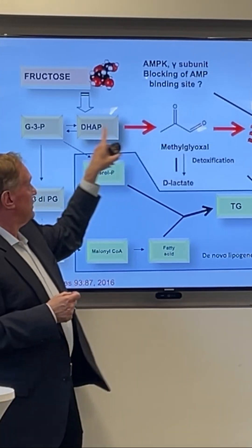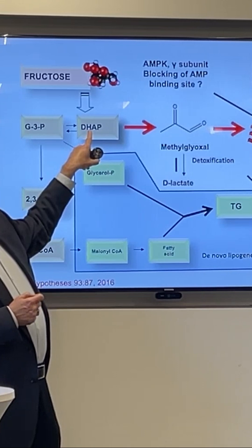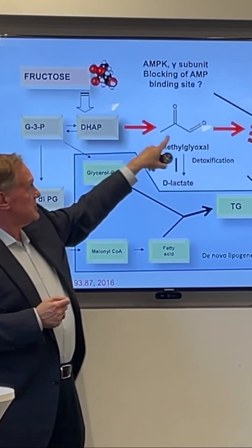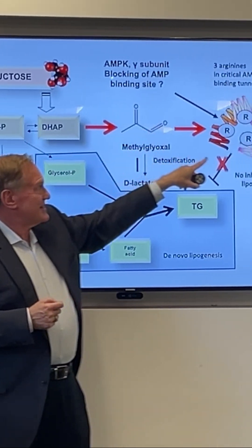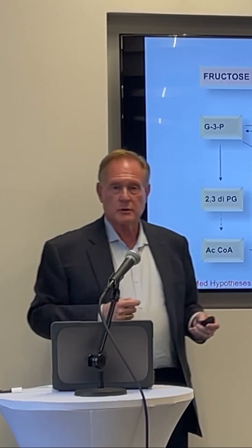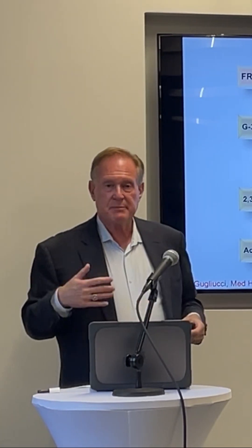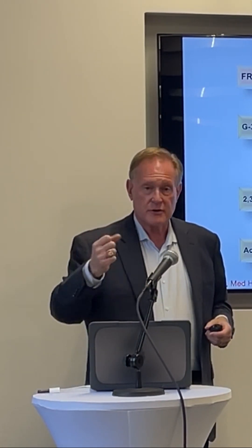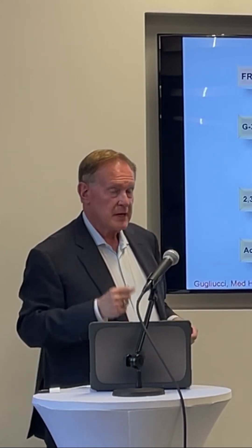The methylglyoxal gets made from dihydroxyacetone phosphate from fructose, fits inside there, and then you turn off your AMP kinase irreversibly. You have basically killed your AMP kinase, so your AMP kinase goes down.